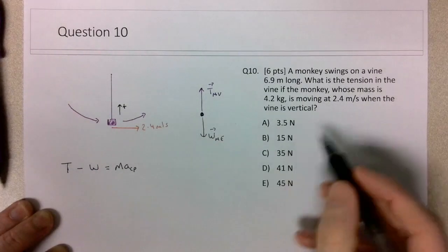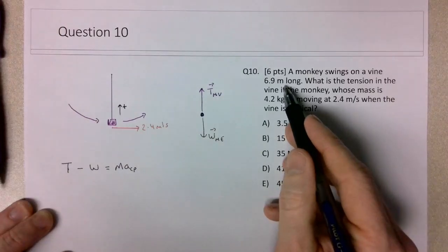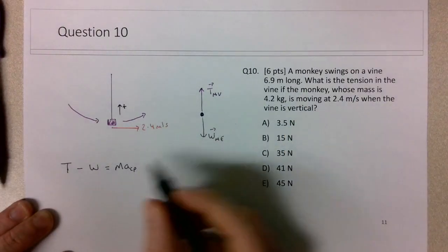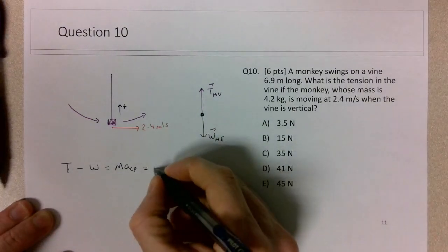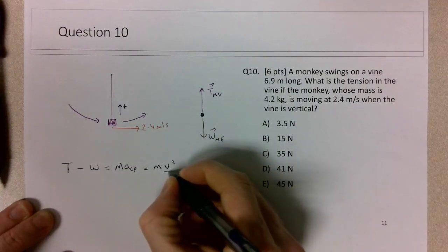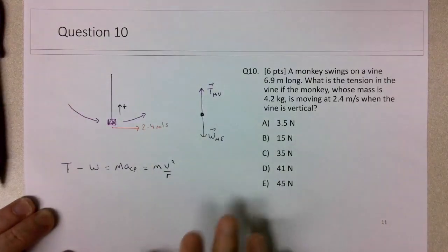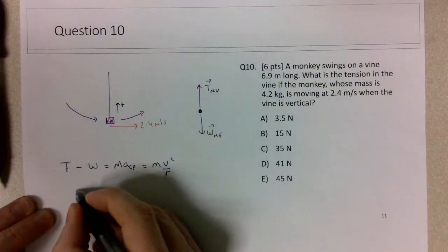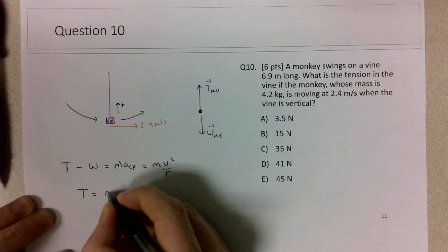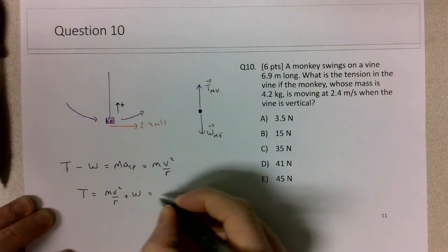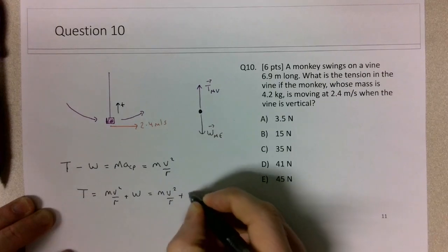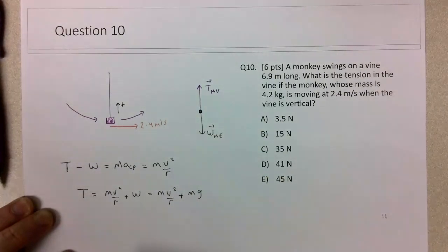In this case, since we have the radius of the vine, I will use the a_cp, and we have the speed, I'll use the v squared over r term for the centripetal acceleration. Now we're trying to solve for this tension, so the tension will be equal to m v squared over r plus the weight, so that's m v squared over r plus mg, so we have a common term there in the mass.